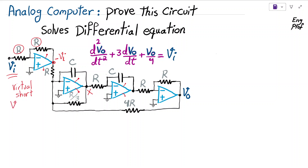Since all four op-amps are ideal and in linear region, virtual short is valid for each one. This means the voltage at the positive input terminal equals the voltage at the negative input terminal. Since the positive input terminal of all four op-amps is AC grounded, both terminals are at zero volts.